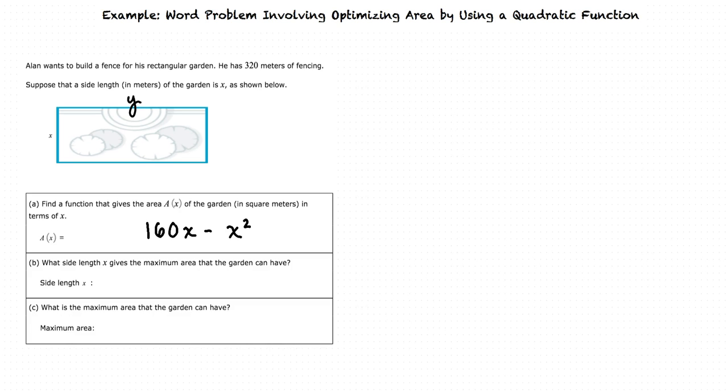Looking at the second part of the problem, we are asked to find the side length of x that gives us the maximum area that this garden can have. We will do this by first finding the vertex of the quadratic function using the vertex formula: negative b over 2a. b, in this case, is the coefficient of x, 160. And a is the coefficient of x squared, which is negative 1. This simplifies to 80, or in the context of this problem, 80 meters.